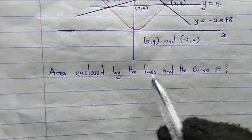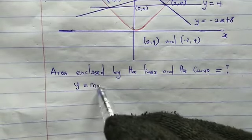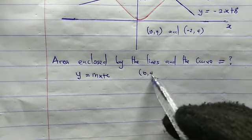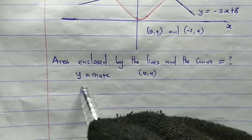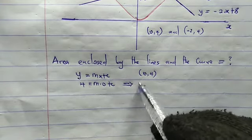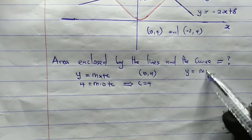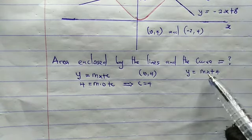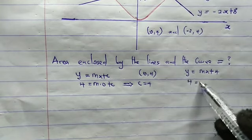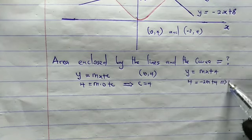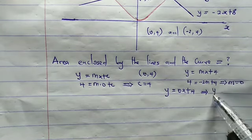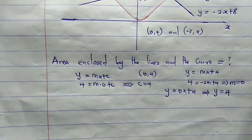We want to prove that the equation of the line is y = 4. The general form is y = mx + c, where m and c are unknown constants. Using the first point (0, 4): 4 = m(0) + c, which implies c = 4. Using the second point (−2, 4): 4 = −2m + 4, which gives m = 0. So the line is y = 0·x + 4, which means y = 4. Cool — let's go back to the graph.